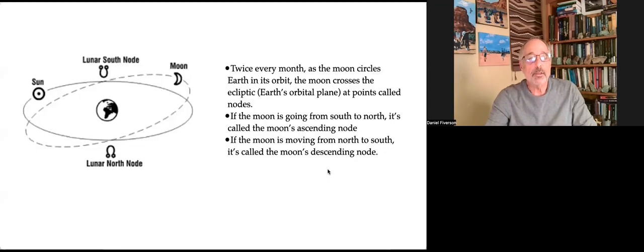Twice every month, the moon circles the Earth in its orbit, and the moon crosses the ecliptic at points called the nodes. If the moon is going from south to north, it's called the moon's ascending node. If the moon is moving from north to south, it's called the descending node.